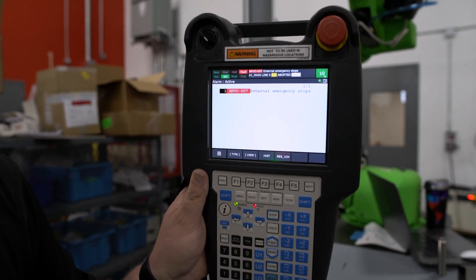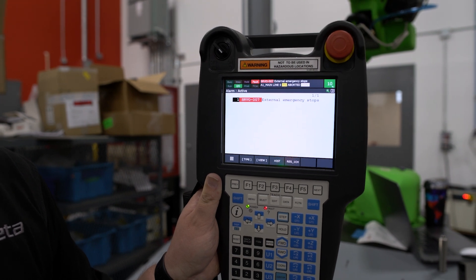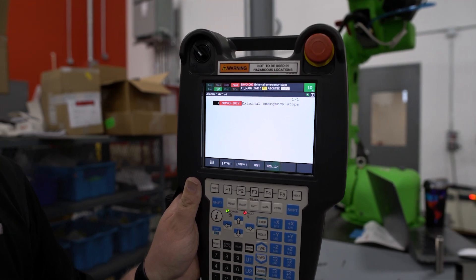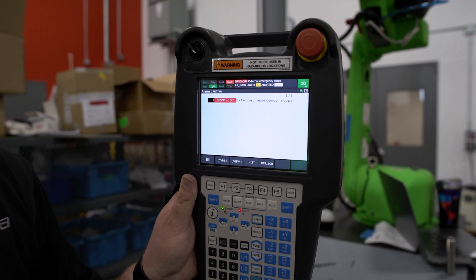This will require you to walk around to each e-stop, whether it is lit or not lit, to make sure it is not pressed and to depress it if it is.